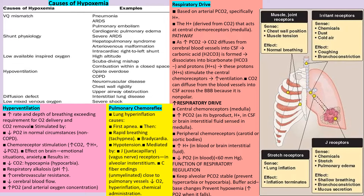In the chloride shift, inside the RBC, carbon dioxide combines with water to make carbonic acid, which dissociates into H+ and bicarbonate ions. Bicarbonate leaves the RBC and chloride enters. Causes of hypoxemia include decreased fraction of inspired oxygen, ventilation-perfusion mismatch, hypoventilation, shunting, and diffusion limitation. Hypoxia is decreased oxygen in tissues at PO2 less than 60 mmHg, while hypoxemia is less oxygen in the blood at PO2 less than 80 mmHg.